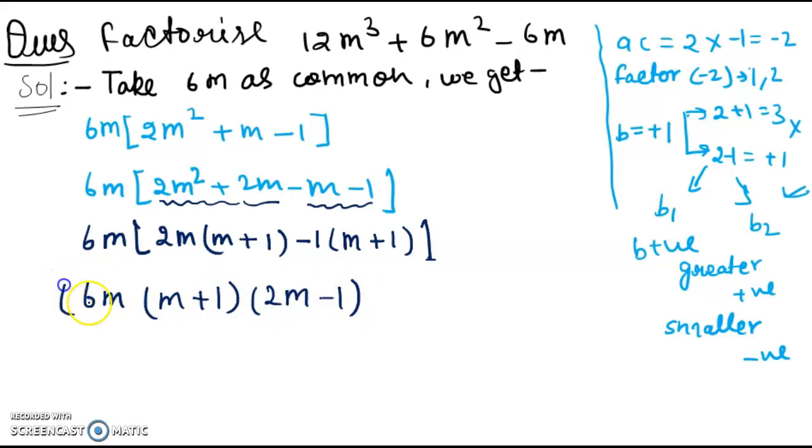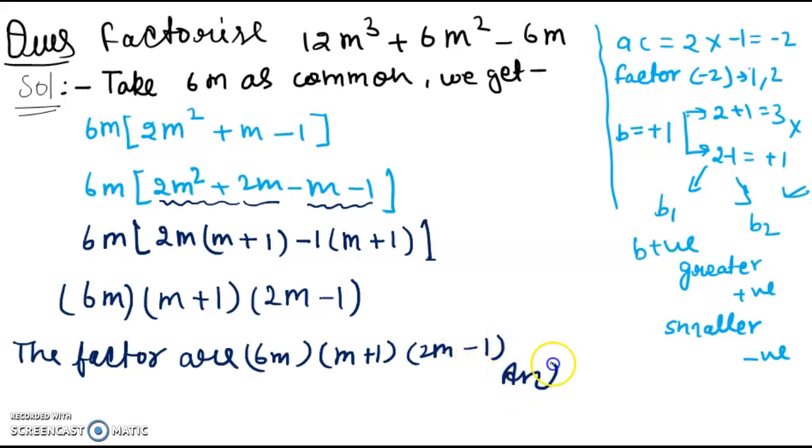So students, you see here there are three factors. So the required answer, the factors are 6m, m plus 1, and 2m minus 1. So students, it is our required answer.